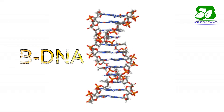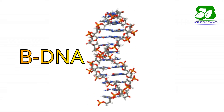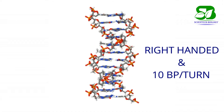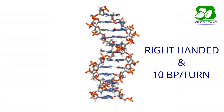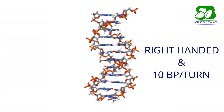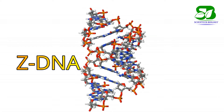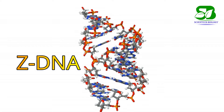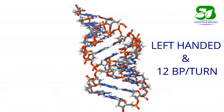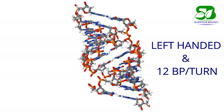B-DNA, which is also right-handed and has 12 base pairs in each turn. Z-DNA, which is left-handed and has 12 base pairs in each turn.